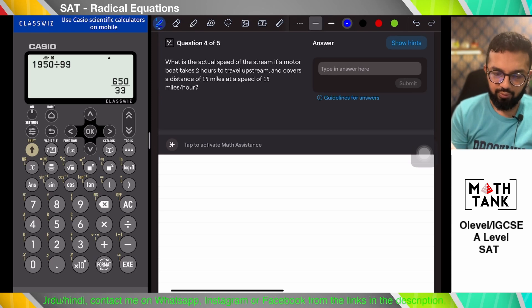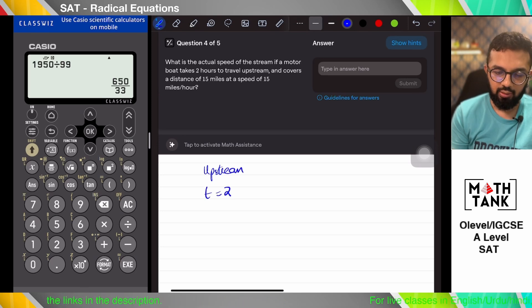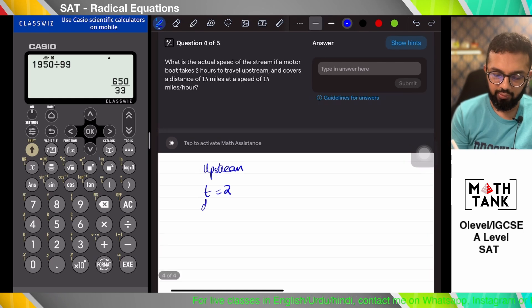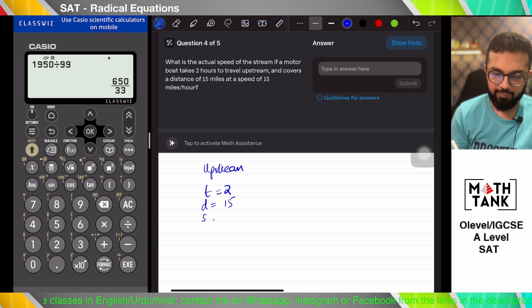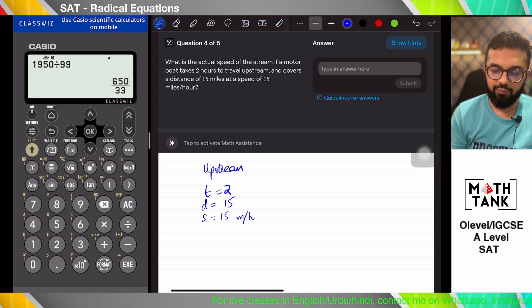Then it says what is the actual speed of the stream if a motorboat takes two hours to travel upstream? Time is two hours, time is three hours, and cover the distance of 15 miles at the speed of 15 miles per hour. The distance is 15 miles. Speed is three miles per hour. And what is the actual speed of the stream?